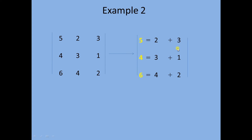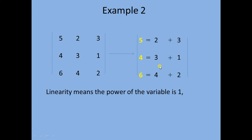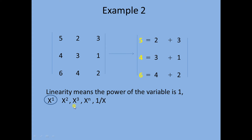What is the meaning of linear combination? We can understand combination easily, but what do we mean by 'linear'? Linearity means the power of the variable is one. For example, x raised to the power one — even if the power is not written, it is assumed to be one. Whether it is x or x raised to the power one, both are the same. So only x raised to the power one is linear.